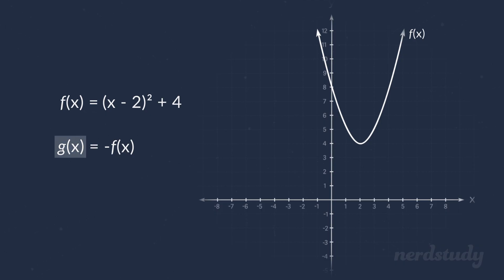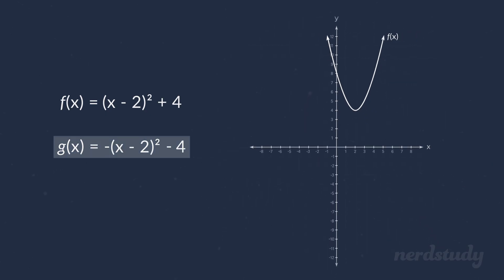Well, since g(x) is equal to negative f(x), we can replace the entire function here to get the negative of all of this. Expanding this gives us the following. And if we plotted out this graph, we would indeed end up with this graph being reflected along the x-axis.